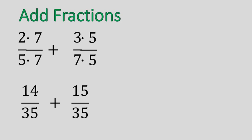And our second fraction, three times five is fifteen, seven times five is thirty-five. Notice we have the same denominator now, so all we would need to do is add the two terms. So that becomes fourteen plus fifteen to get twenty-nine with our common denominator of thirty-five remaining the same.